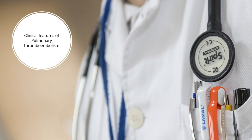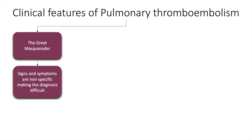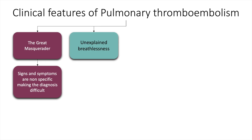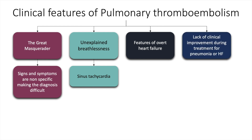The clinical features of pulmonary thromboembolism may be subtle in that it has been called the Great Masquerader because of signs and symptoms being nonspecific, making the diagnosis difficult. The most common symptom is unexplained breathlessness along with sinus tachycardia. The patient may also present with features of overt heart failure, and lack of clinical improvement during treatment for pneumonia or heart failure may be a clue.